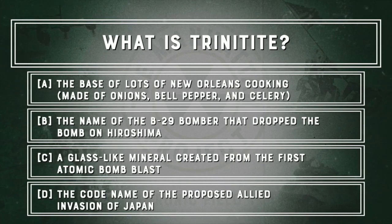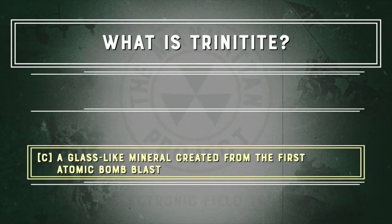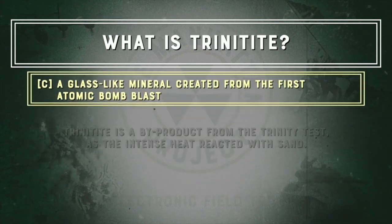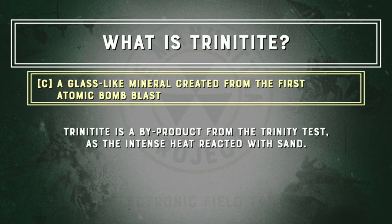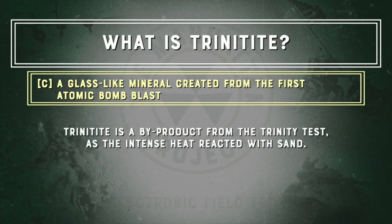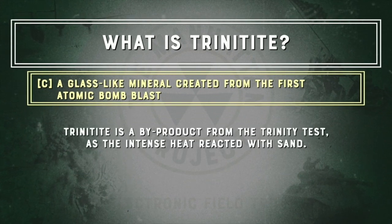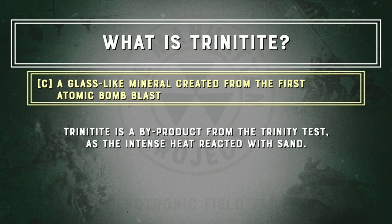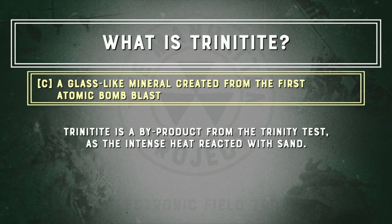What is Trinitite? The answer is C — a glass-like mineral created from the first atomic bomb blast. Trinitite is a by-product of the Trinity test, as the intense heat reacted with sand.